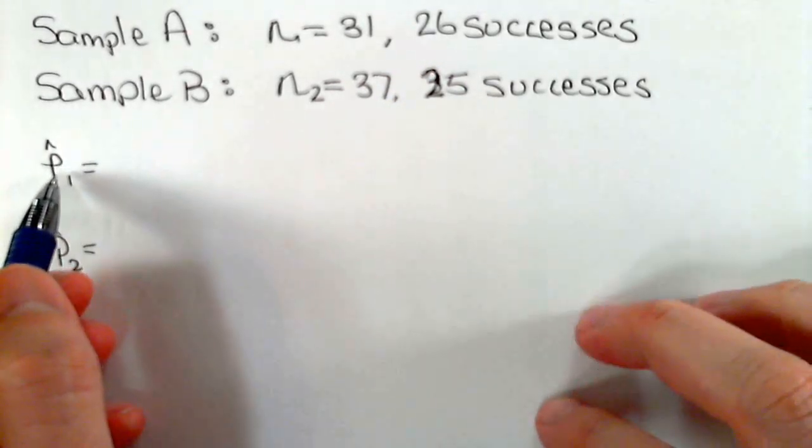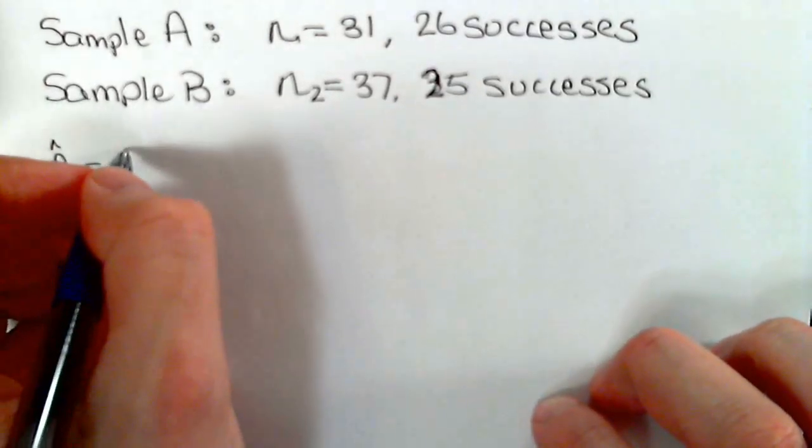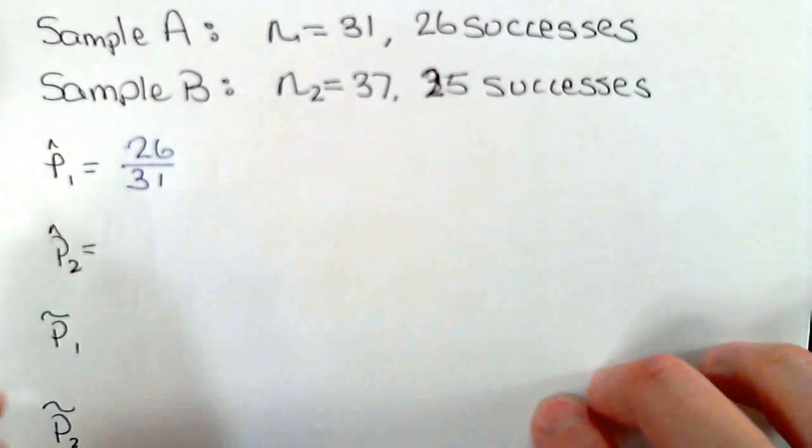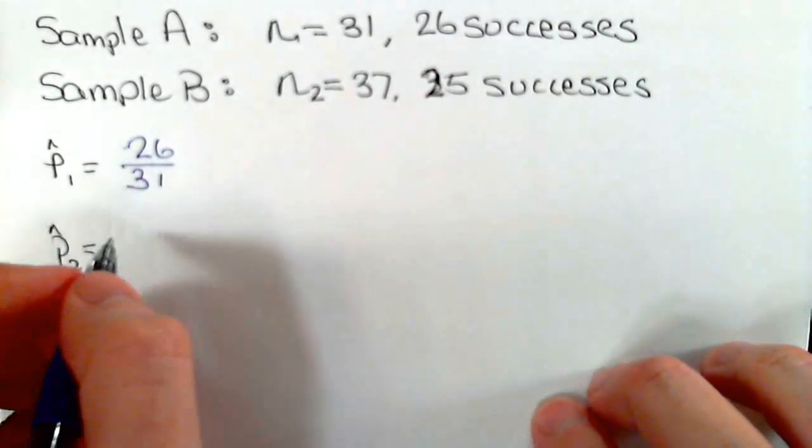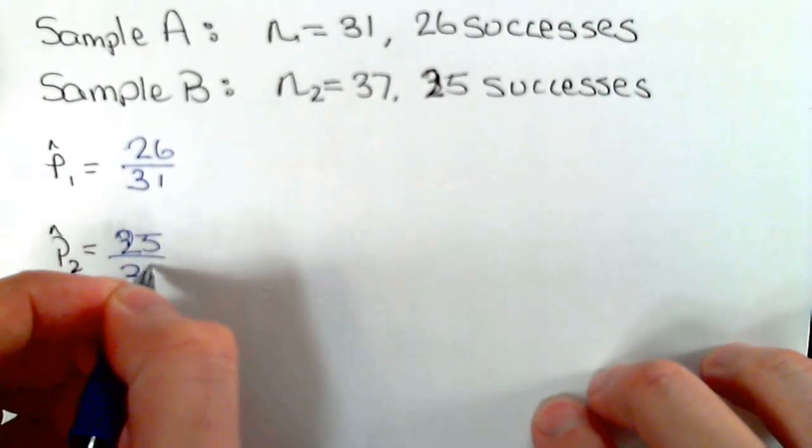We're first looking for the sample proportion. The sample proportion is the number of successes, which is 26, over the sample size 31. For the second sample, it's 25 successes over 37.